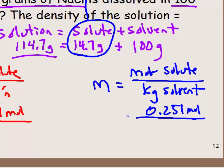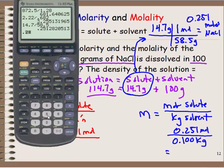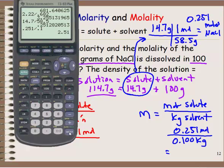For molality, the denominator is kilograms of the solvent. We have 100 grams of water — moving the decimal three places left gives 0.100 kilograms. So 0.251 divided by 0.100 gives 2.51 little m, molality. That one's done.